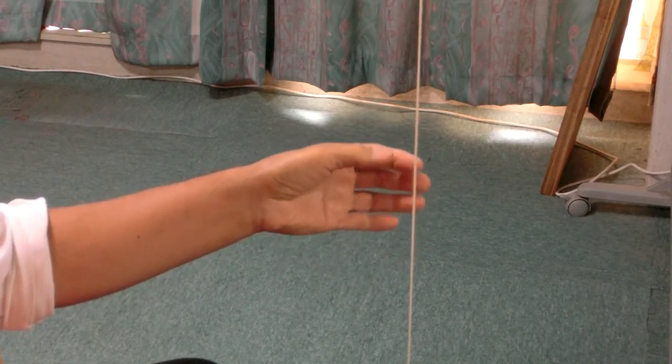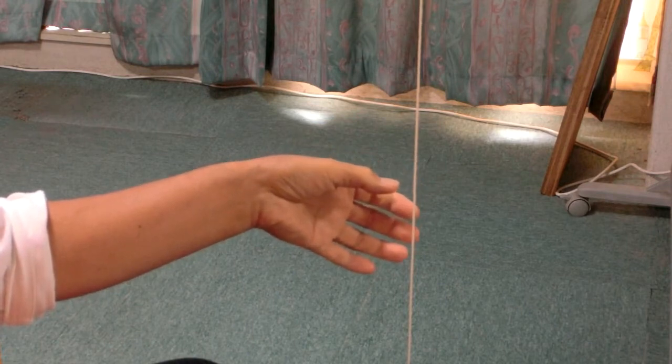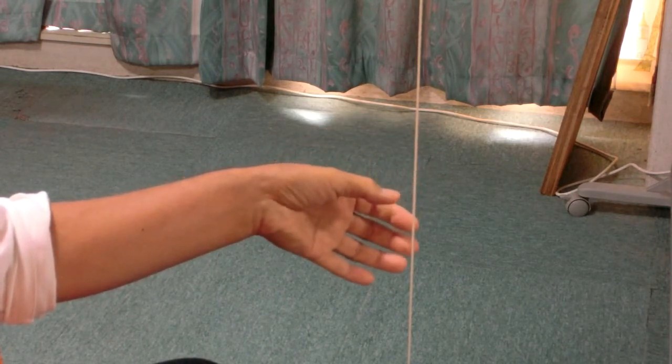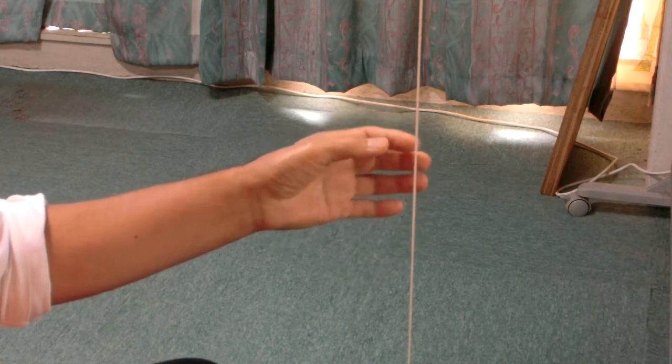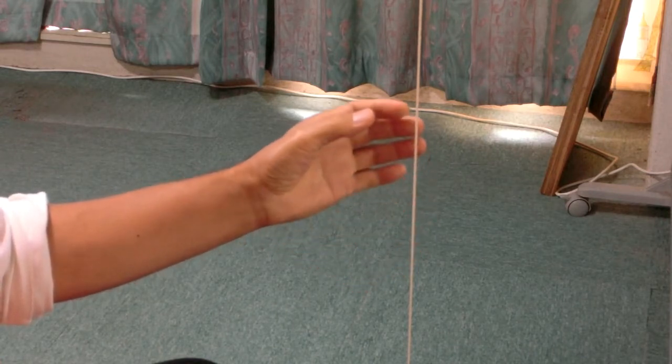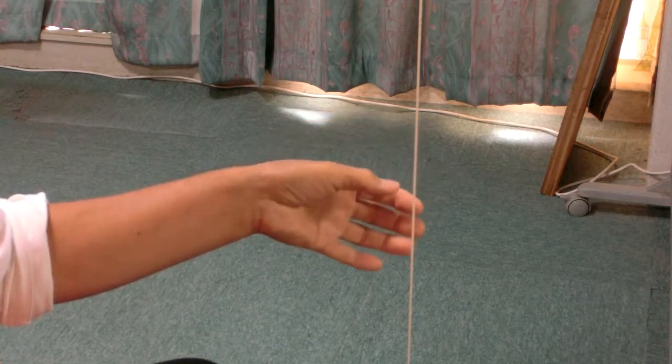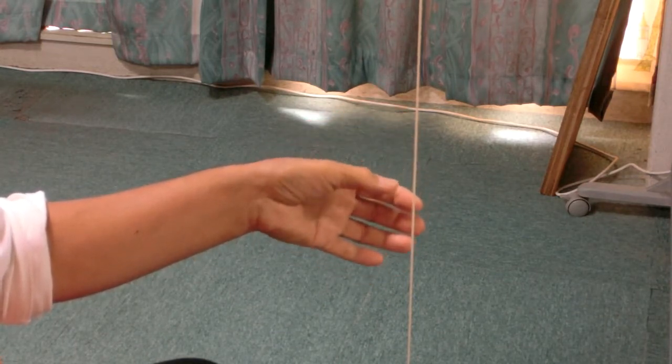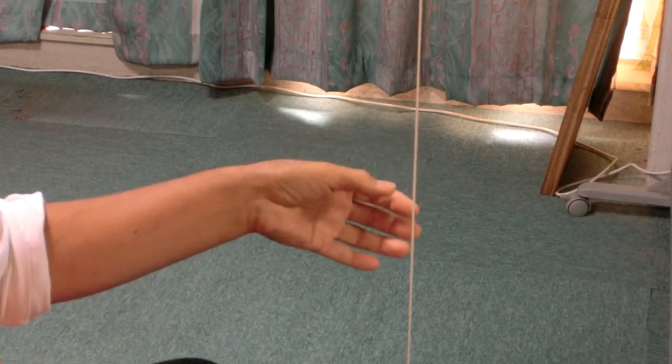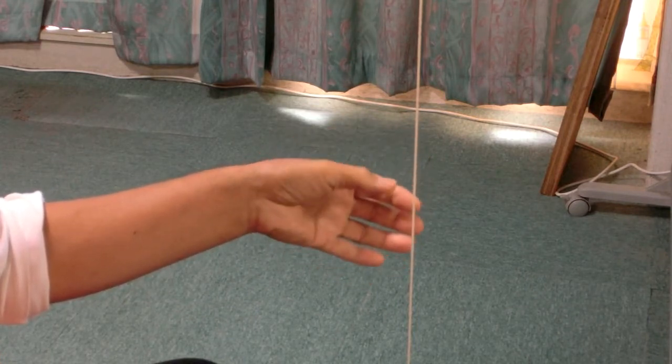Pay attention to the fingers. How do the fingers come close to the floor? In other words, pay attention how much the wrist bends. This movement is called adduction of the wrist.